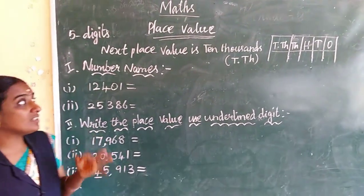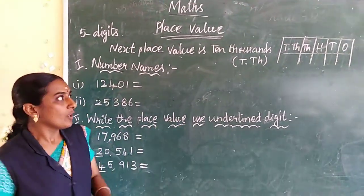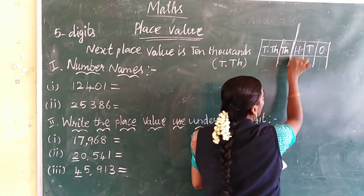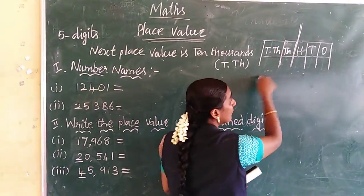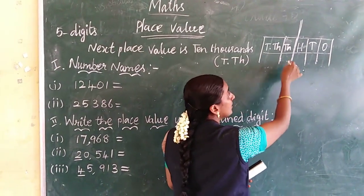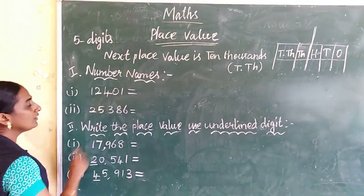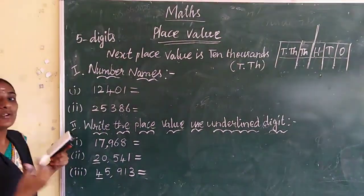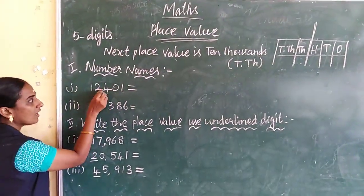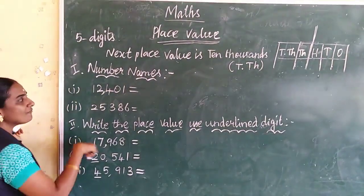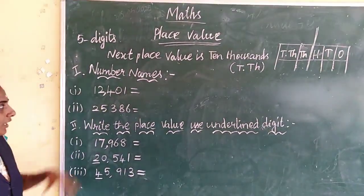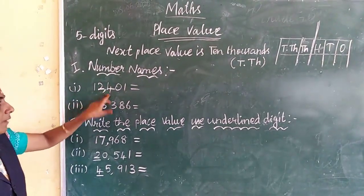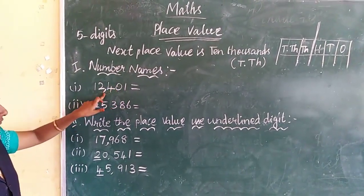Ok, first three numbers after — look at the chart: 1s, 10s, 100 — so separate 3 digits. After 1,000 and 10,000, this is the best period. So now we use the comma: 1s, 10s, 100 — after use comma. Once again: 3 place values, then use comma — 1s, 10s, 100, after use comma.